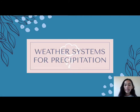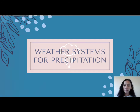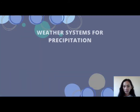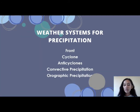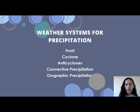The next topic is weather systems for precipitation. We have here five weather systems: the front, cyclone, anti-cyclones, convective precipitation, and orographic precipitation.